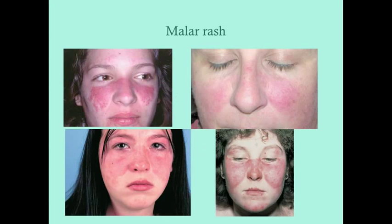The malar rash: lupus is named after the Latin word for wolf, and wolves actually have this kind of coloring distribution. The malar rash covers the face underneath the eyes and over the bridge of the nose. It's a very conserved distribution across patients, even though there are different levels of severity — the rash can look a little different, but it follows the same pattern.